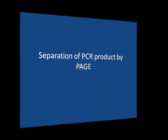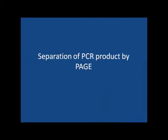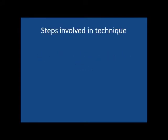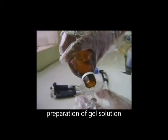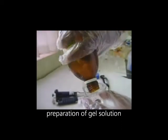Separation of PCR products is done by polyacrylamide gel electrophoresis. Steps involved in this technique are gel casting, running the gel, and staining. Gel solution is prepared using 6% acrylamide, 10% APS, and TEMED.